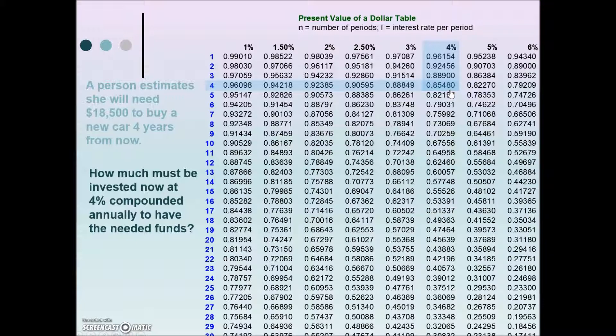To calculate the present value, then we will take our future value, our goal, $18,500, multiply it by the value from the table, 0.85480. And so today, for this to become a reality 4 years from now, the $18,500, we would need to have deposited in an account $15,813.80.